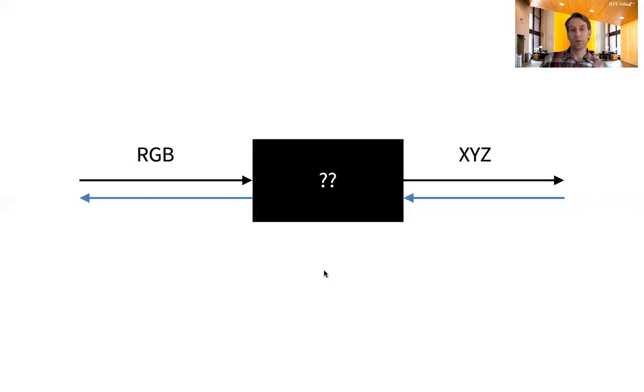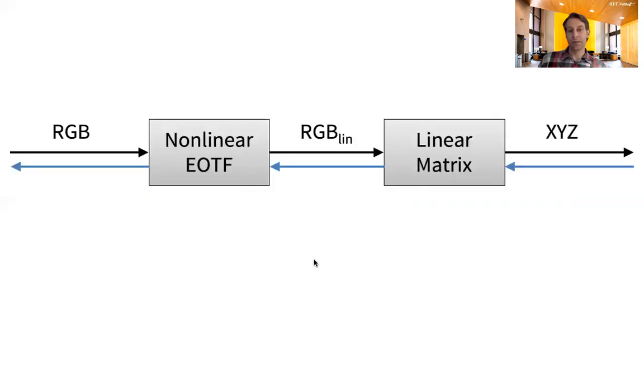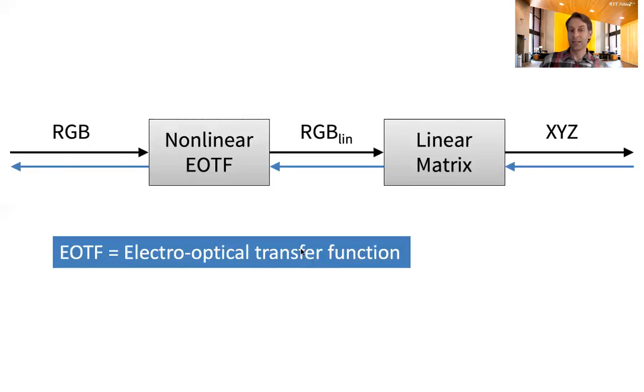We could approach this as a black box, which means we don't know or don't care what's happening inside the display, and we simply measure all possible inputs and outputs. However, a structured model is more robust if we know the display behaves according to our expectations. We want to make a model that separates the linear part, allowing a linear matrix computation, from the nonlinear part—an EOTF or electro-optical transfer function that describes how the optical or light output relates to the electric or digital input.